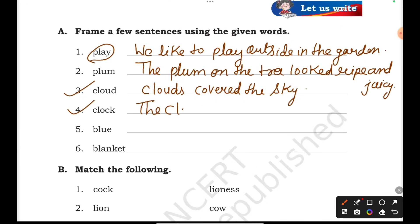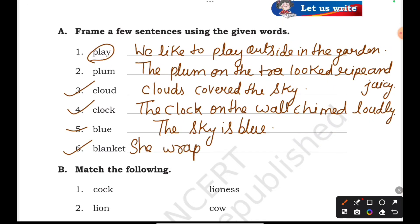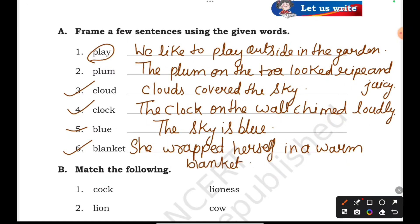The clock on the wall. You can use the clock on the wall. Blue color — the sky is blue, or the shirt is blue. Blanket — she wrapped herself in a warm blanket in the cold.